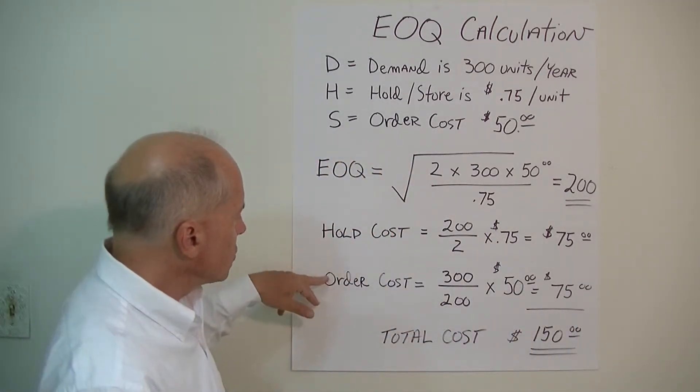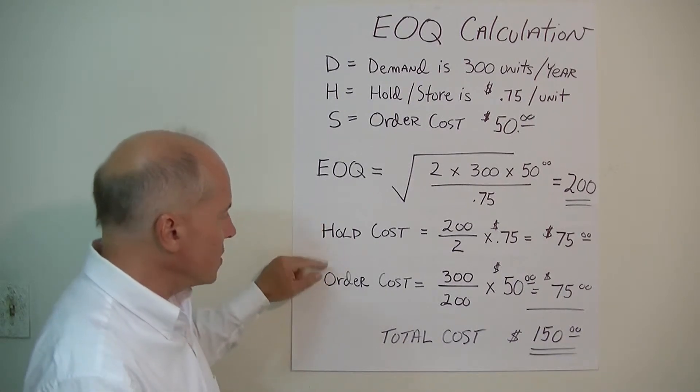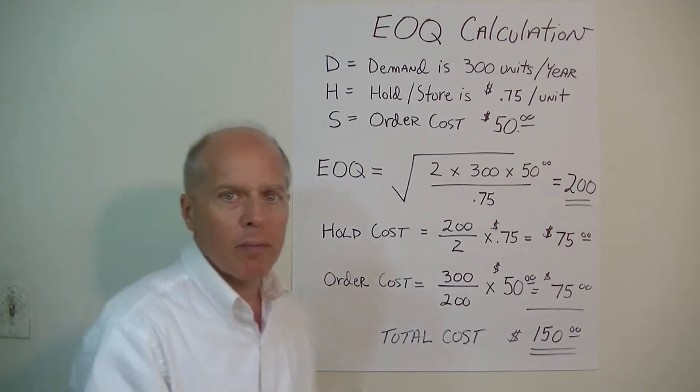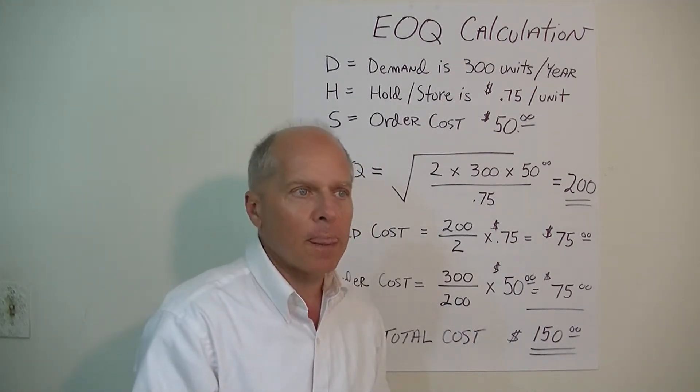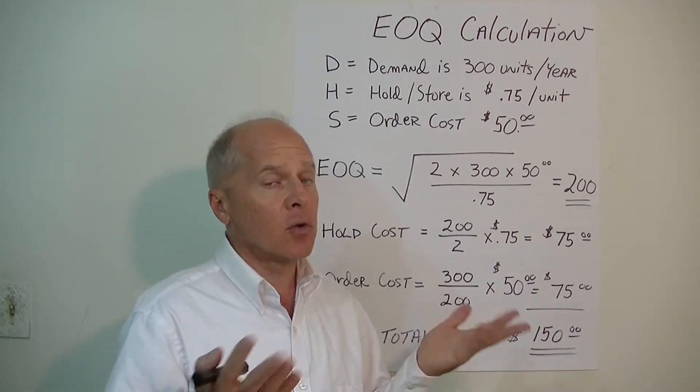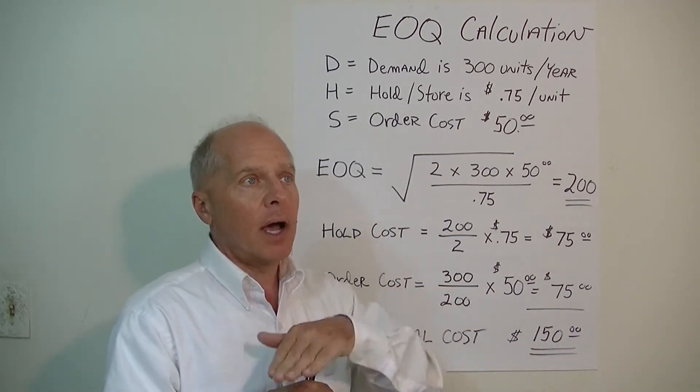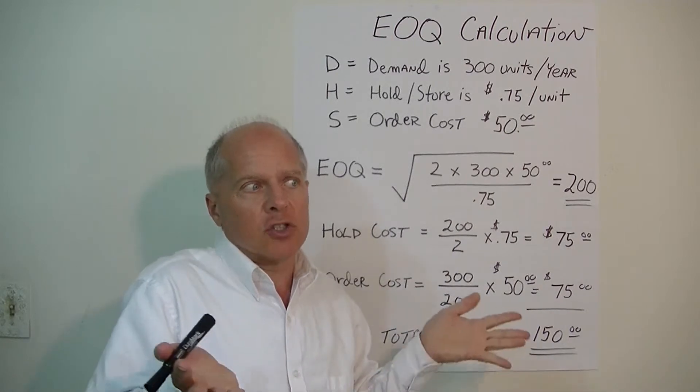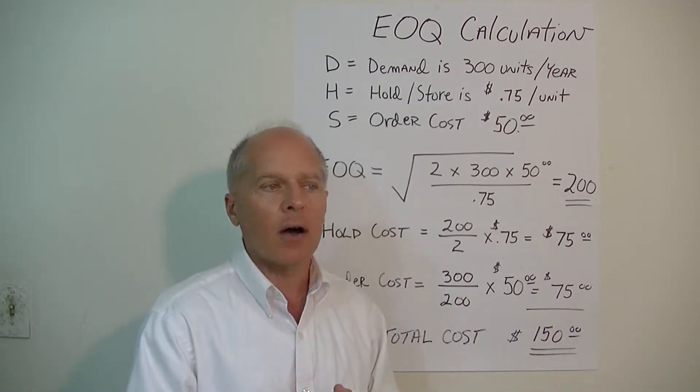This is the Economic Order Quantity model to help you figure out what your order size should be. Now, a good question would be: my inventory fluctuates, I'm not sure I can really figure that out.